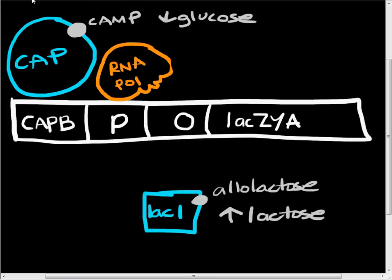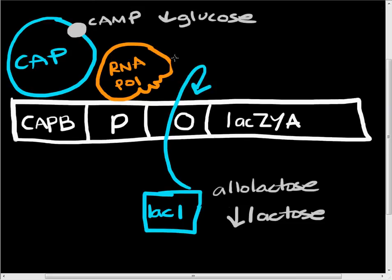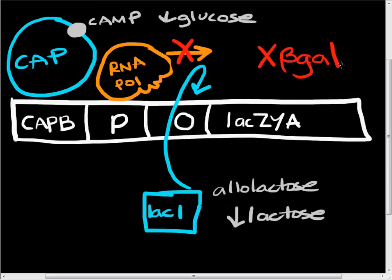Now let's see what happens if we lower the lactose levels. With low lactose, there is no allolactose bound to lacI, so lacI is free to bind to the operator. When lacI is bound to the operator, it prevents RNA polymerase from entering the elongation stage, and so we won't get production of beta-galactosidase. This makes sense because we don't want to make beta-galactosidase if there is no substrate — no lactose — for it to act on.